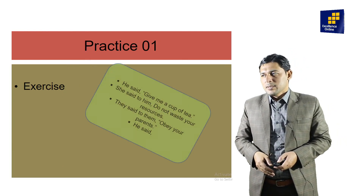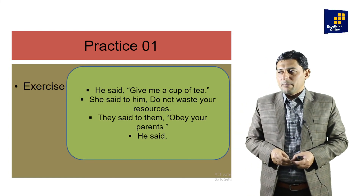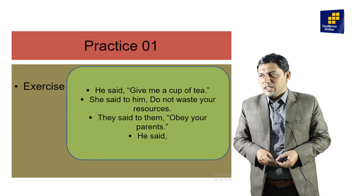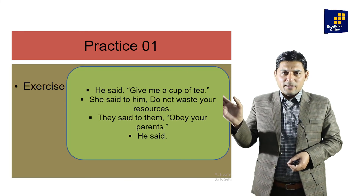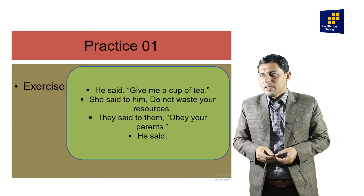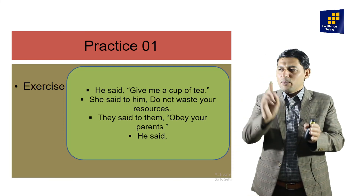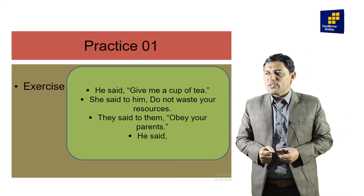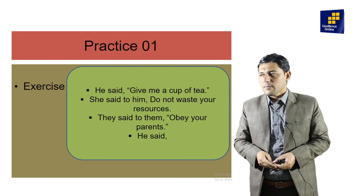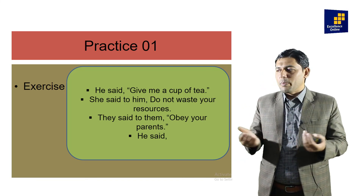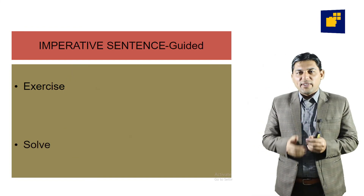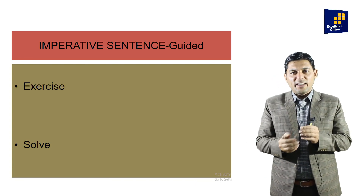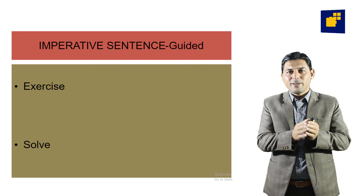Now we have an exercise. Exercise sentence one: 'He said, give me a cup of tea.' Sentence two: 'She said to him, do not waste your resources.' Sentence three: 'They said to them, obey your parents.' This covers imperative sentences. We have seven types of sentences in narration. Today we discussed imperative sentences with several moods. Hopefully you like this video. Thank you.